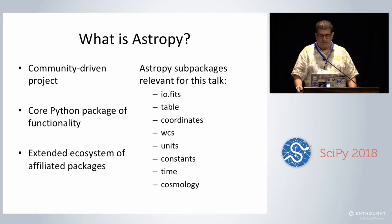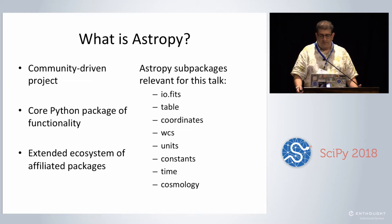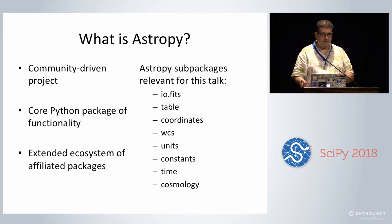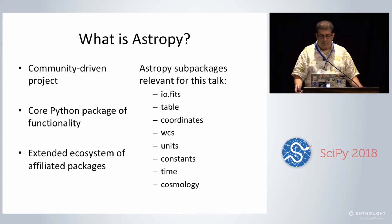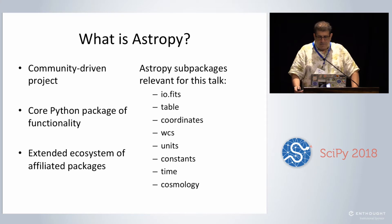There's IO.fits for the Flexible Image Transport Standard, commonly used in astronomy. Table, coordinates. WCS stands for World Coordinate System — when we map pixels to celestial coordinates on the sky. AstroPy units and constants — I'm now a maintainer for AstroPy.constants, I finally made it onto the team. AstroPy.time and cosmology.